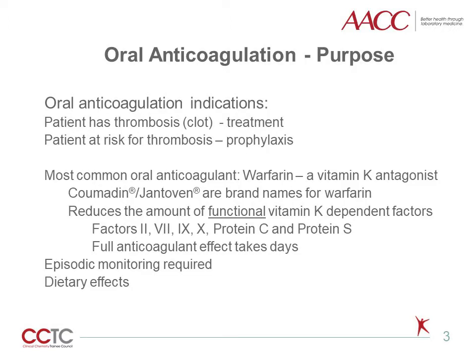Oral anticoagulation is administered for the treatment of thrombosis — the lay term for thrombosis is clot — or it is used prophylactically for a patient at risk for thrombosis in order to prevent clot formation. The most common oral anticoagulant administered is warfarin, a vitamin K antagonist. Coumadin and Jantoven are brand names. Warfarin functions as an anticoagulant by reducing the amount of functional vitamin K-dependent procoagulant factors, specifically factors 2, 7, 9, and 10.